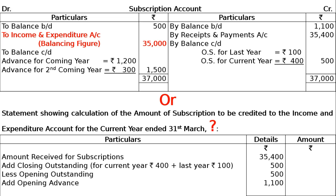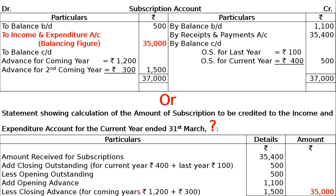So the final amount is 35,000 rupees. This 35,000 rupees is our current year subscription income and this is the final answer.